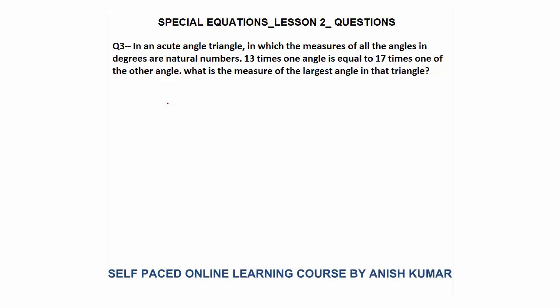Question number 3: In an acute angle triangle in which the measures of all angles in degrees are natural numbers, 13 times one of the angles, say 13X, equals 17 times another angle, that is Y. The three angles X, Y, and Z must sum to 180 degrees, since in any triangle the sum of all angles is 180 degrees. Pause the video, try to solve yourself, then look at the way I have solved.